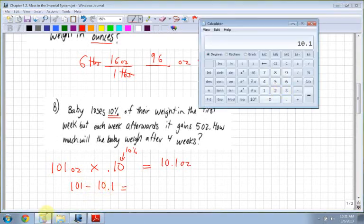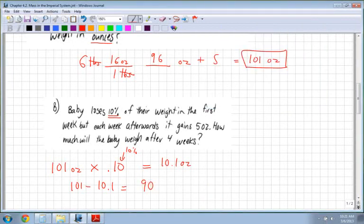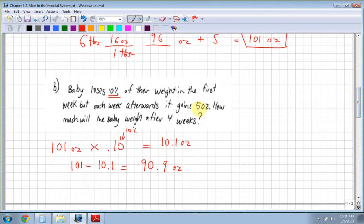which is equal to 90.9. Now that's how much the baby weighs after one week, because it has lost 5 ounces.